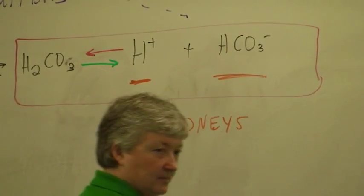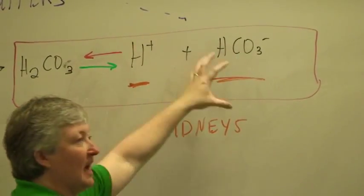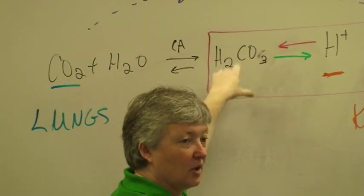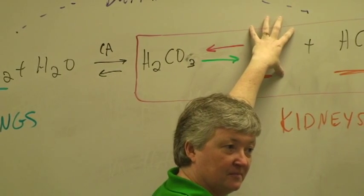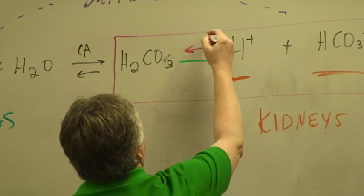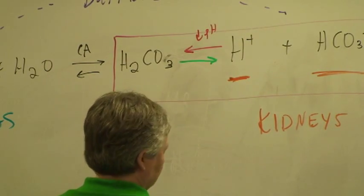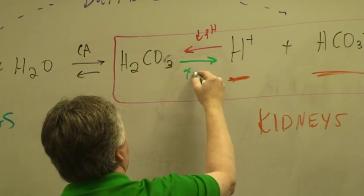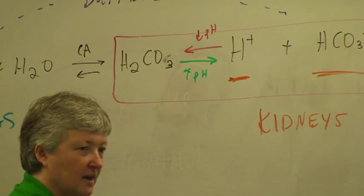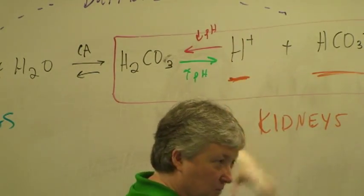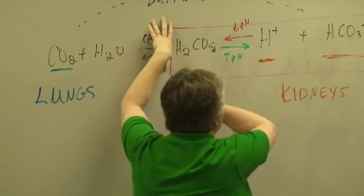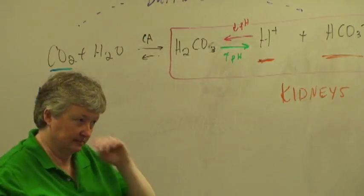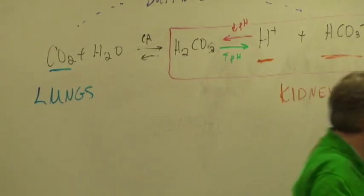If pH is low, we have too many hydrogens. We want hydrogen to combine with bicarbonate to make carbonic acid — carbonic acid in this state has no effect on pH. It's only when the hydrogen ions are by themselves that they affect pH. If pH is high, carbonic acid will dissociate to produce hydrogen ions. The step going from CO2 and water to carbonic acid happens inside kidney cells and red blood cells, but the dissociation of carbonic acid into hydrogen and bicarbonate happens automatically — it's simply chemical equilibrium.